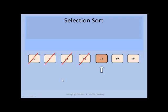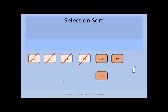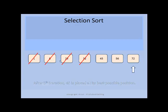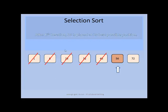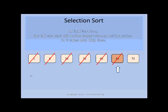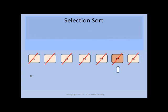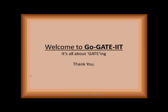We recursively call the selection sort and 45, being the smallest, is swapped with 72. After the 5th iteration, 45 is at its best position. We are left with 56 and 72, and 56 being the smallest, after the 6th iteration 56 is placed at its best position. At the final iteration, the last remaining element is the largest in the series, so it takes only O(1) time. Finally, we have sorted the unsorted sequence and completed the selection sort algorithm. Thank you, I hope you enjoyed this video.